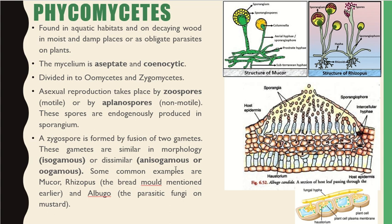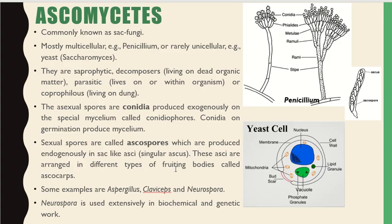Ascomycetes are called sac fungi. They are mostly multicellular, for example Penicillium, or rarely unicellular, for example yeast. They are saprophytic decomposers living on dead organic matter, parasitic living within organisms, and also coprophilous, meaning living on dung. Asexual spores called conidia are produced exogenously on special mycelium called conidiophores.